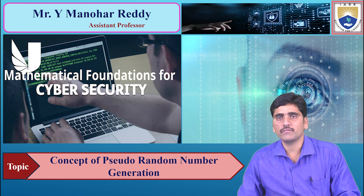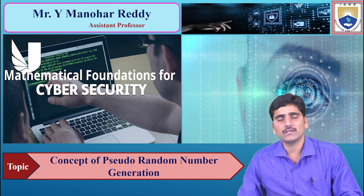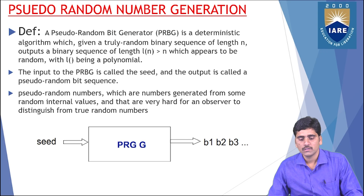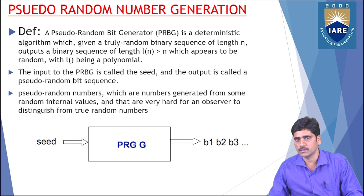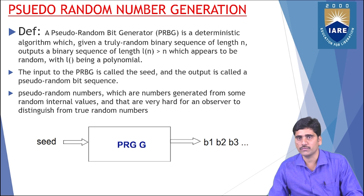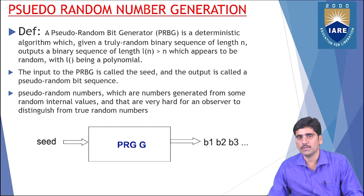We have already seen that different types of numbers are available in number theory, and we discussed how different types of numbers are useful to provide security in real-time concepts. The concept we focus on now is pseudo-random number generation. Different types of numbers provide different types of securities — there are CAPTCHAs generation, OTPs generation, and resetting password generation. These are all different types of number generations based on pseudo-random number generation.